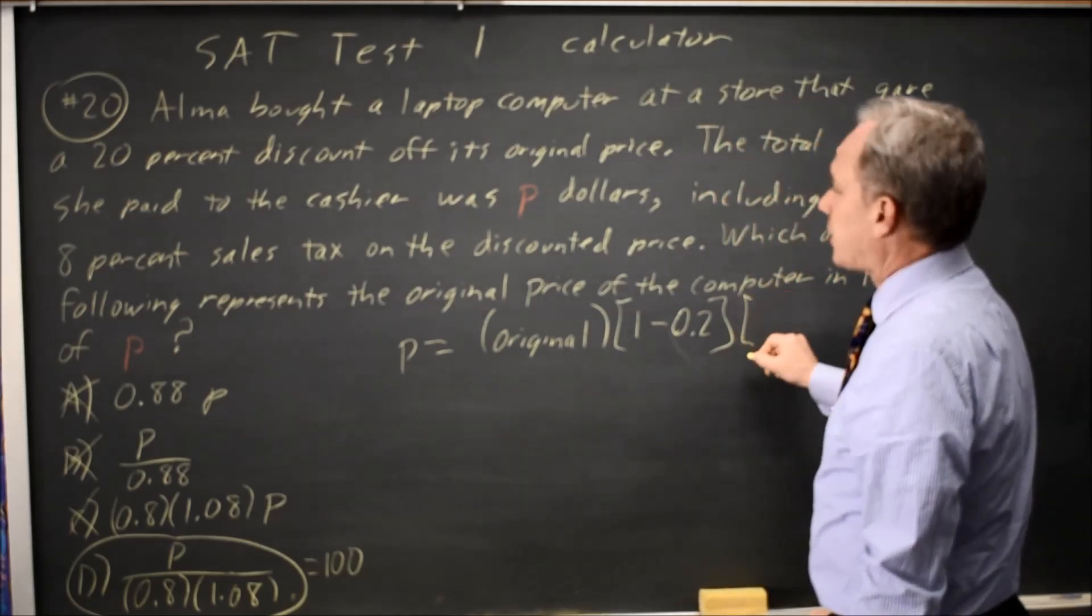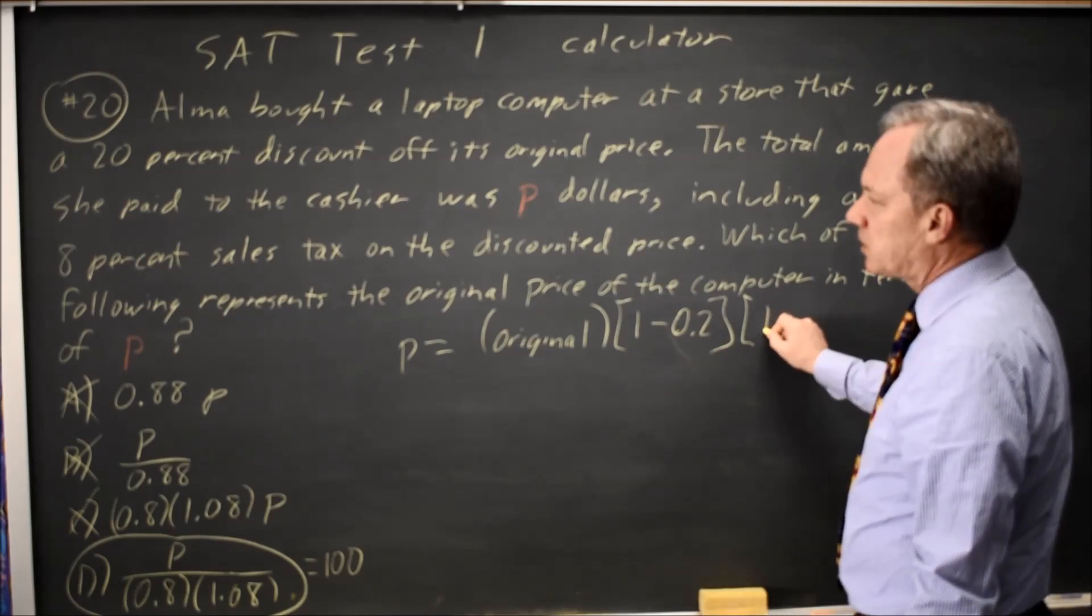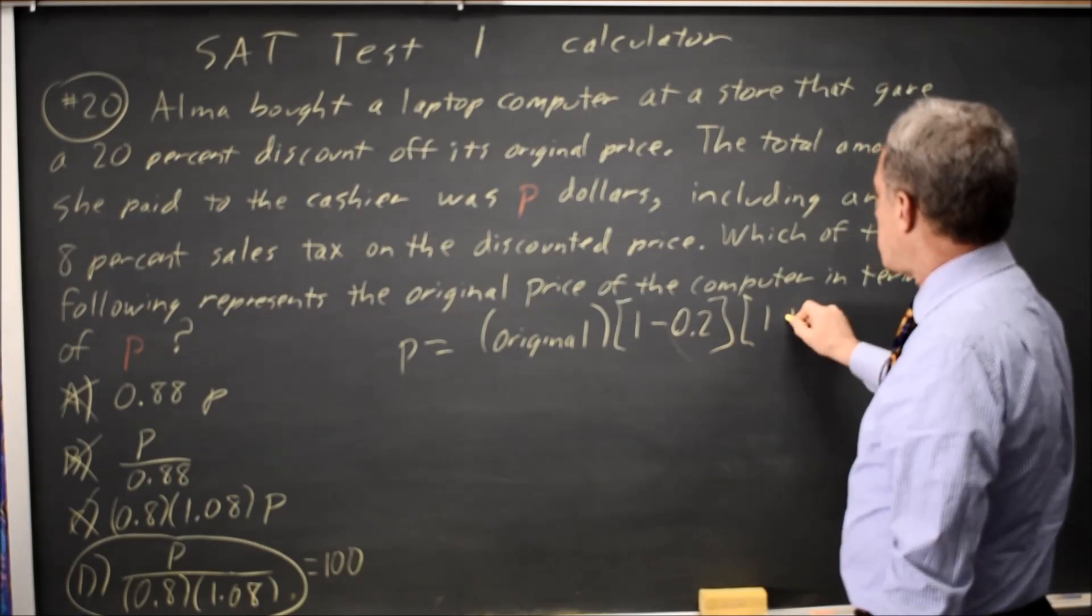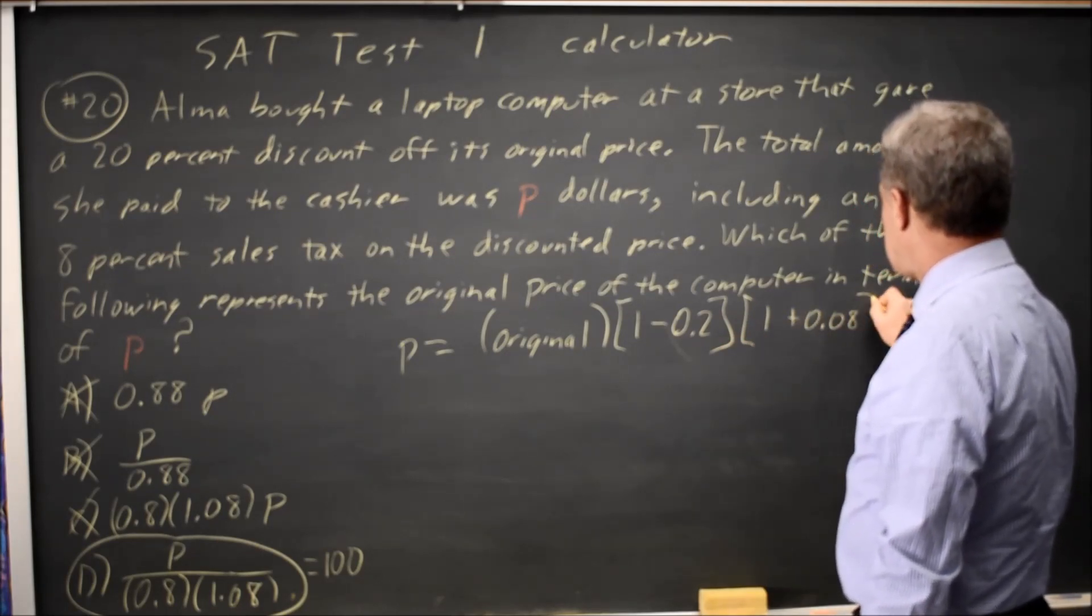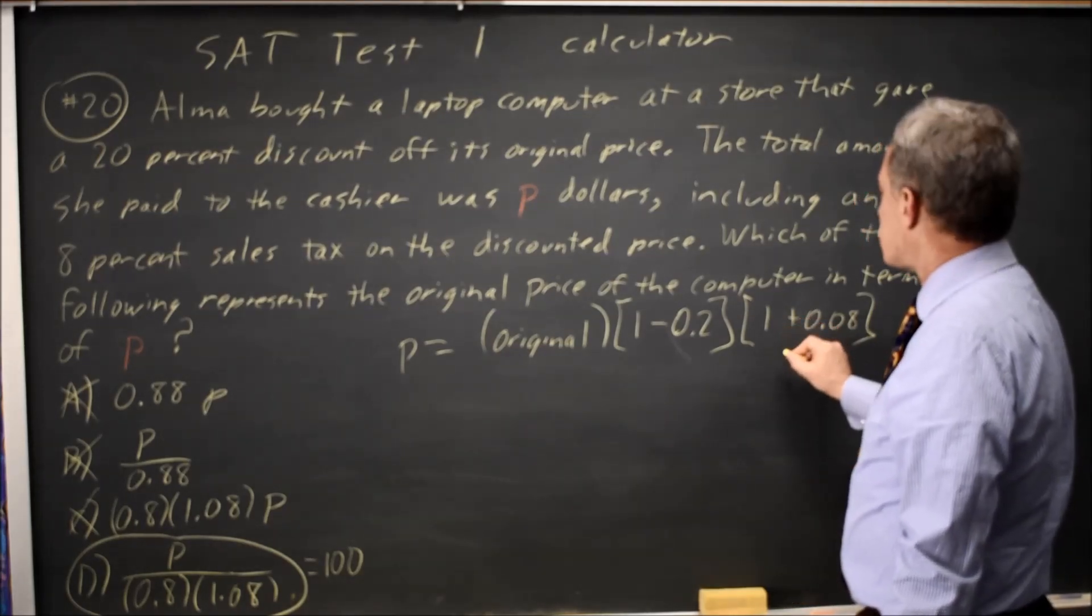And then we're going to add our sales tax of 8%. So it's 1 times the amount we paid for the original price discounted, plus .08 times that amount for our tax.